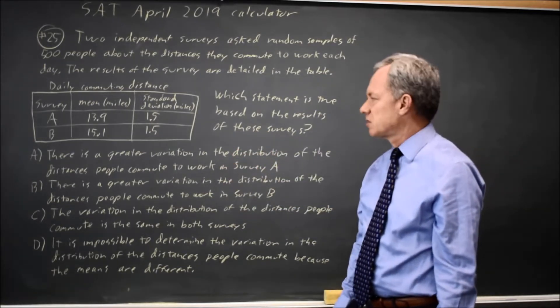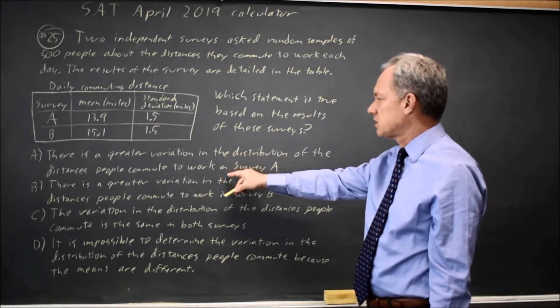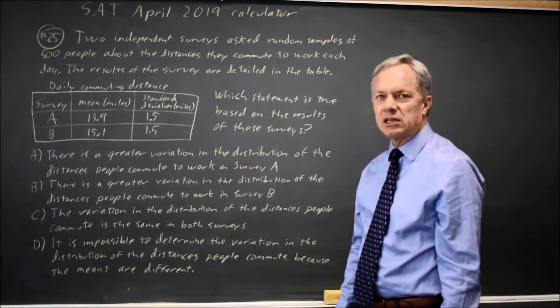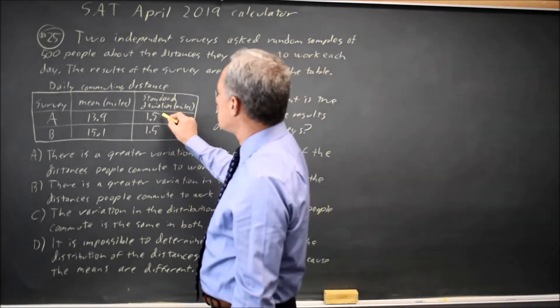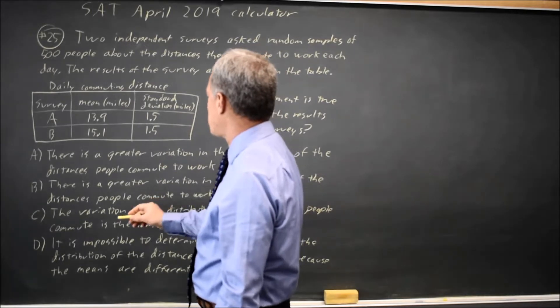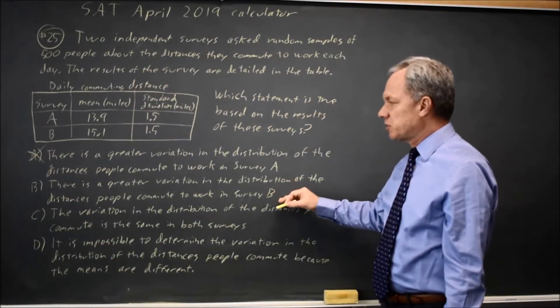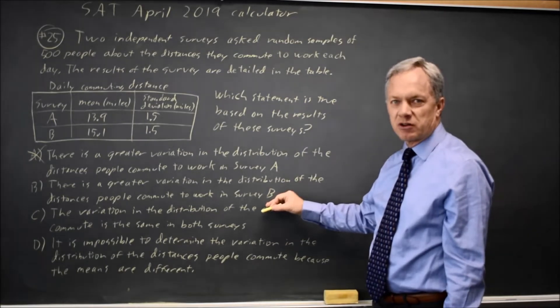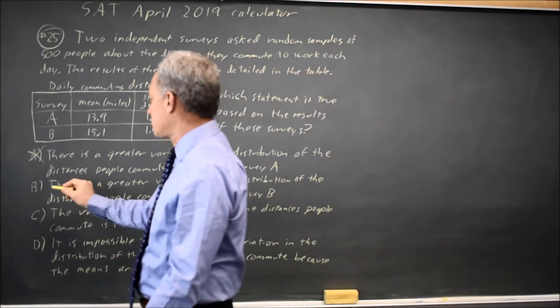The questions are about the variation in the surveys. There's greater variation in the distribution of the businesses people can lead to work in survey A. The variation in the distribution would be the standard deviation. But those standard deviations are the same, so A would not be correct. B says there's greater variation in the distribution of the distances people commute in survey B. That's standard deviation. The standard deviations are the same, so that is not correct.